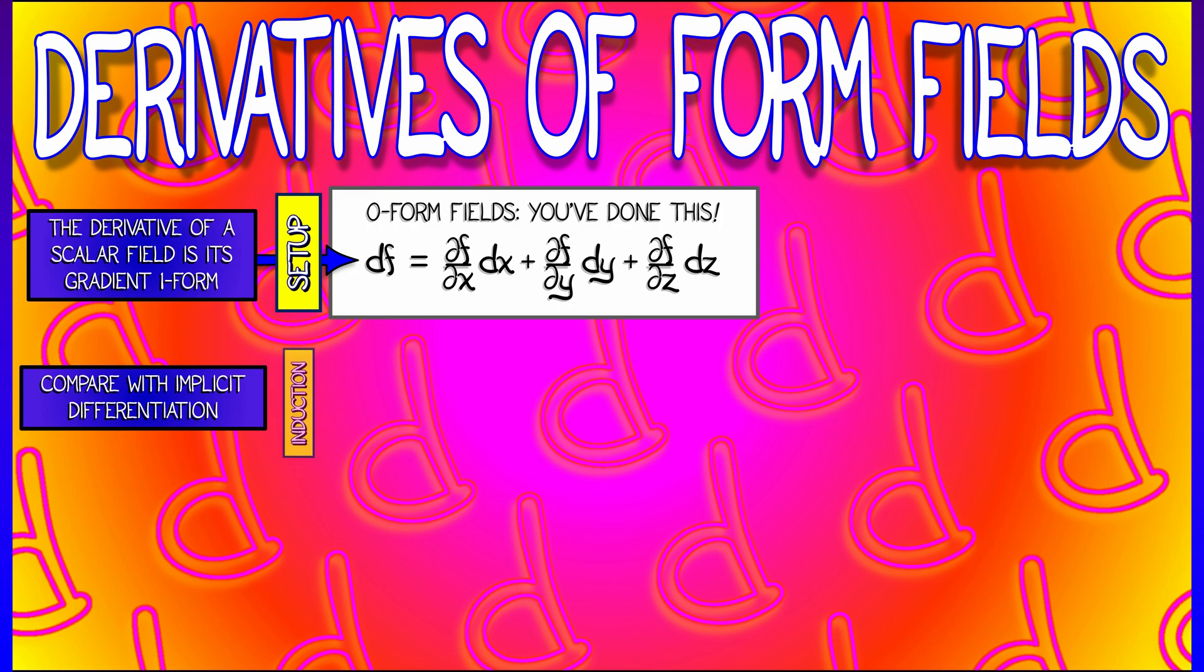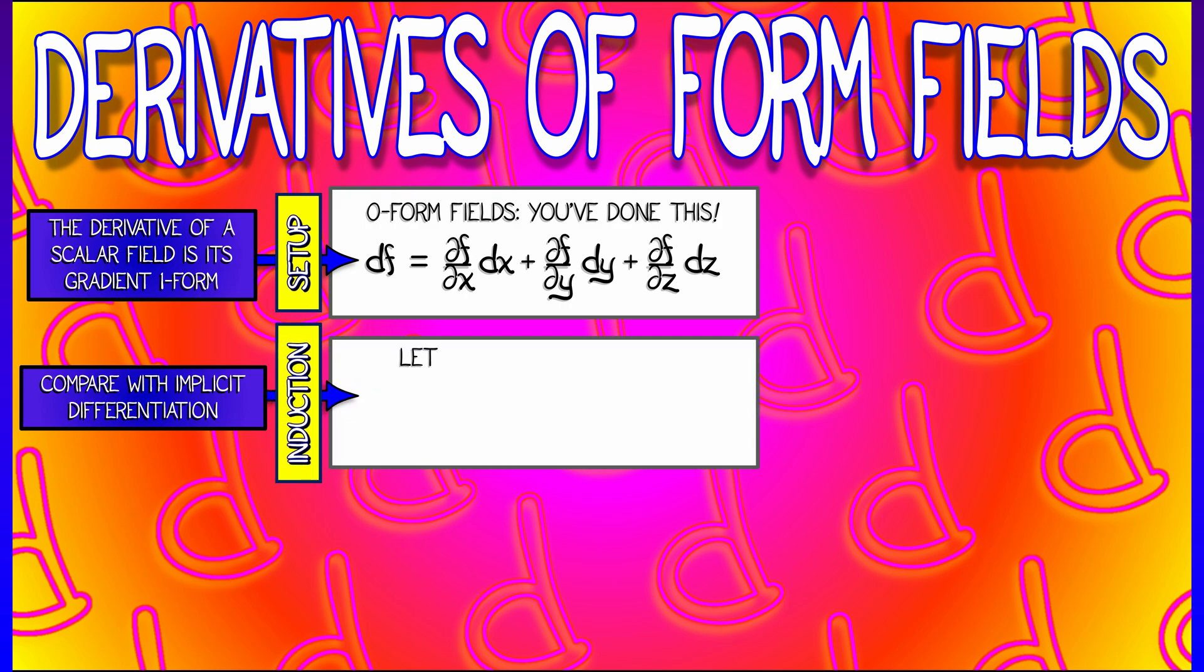But what do we do when we take the derivative of a one-form field? Let's start off simple. Let's say we have a one-form field that looks like f, our scalar field, times dx i, where i is one, two, or three. Then the derivative of this is defined to be df wedge dx i.